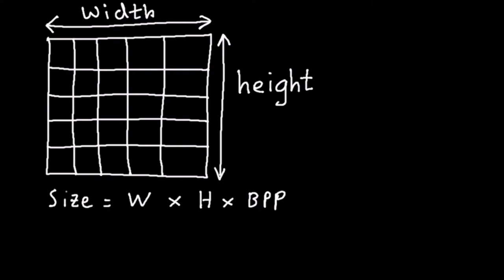So in this example here, we have 5 pixels in width and we have 5 pixels in height as well. So the total number of pixels we have in that image is 25.